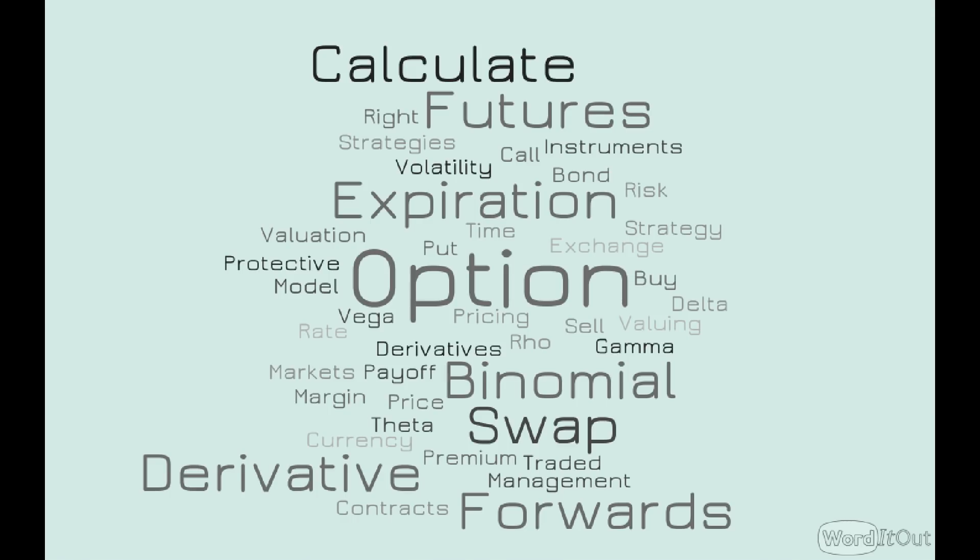The derivatives portion covers options as the biggest topic, along with derivatives, forwards, swaps, and calls. This gives you an overview of all your different options, and if you look into the smaller details you'll find margins and the Greeks — vega, theta, rho, gamma — as well as strategy, different instruments, and volatility. From what many people who have taken the CFA say, calculating swaps is the difficult portion, particularly currency swaps. This section also covers binomial pricing for derivative products.